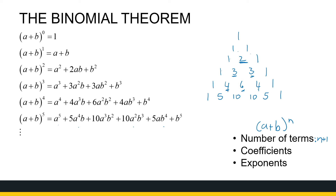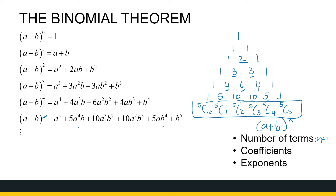We're not necessarily going to use the triangle itself — what we are going to use is the NCR notation. Looking at my final row, with N as my exponent, the coefficients are 5C0, 5C1, 5C2, 5C3, 5C4, and 5C5. You can see that works for all the rows, and that is how we're going to find our coefficients.